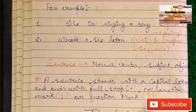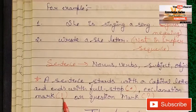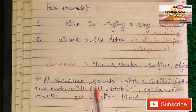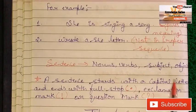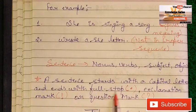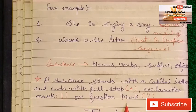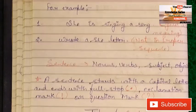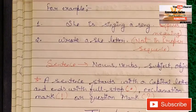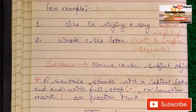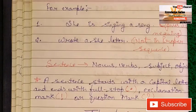One more thing: a sentence can have nouns, verbs, subjects, objects, etc. According to the rules of English grammar, a sentence starts with a capital letter and ends with a full stop, exclamation mark, or question mark. Now next we will learn about its types. There are four types of sentences.